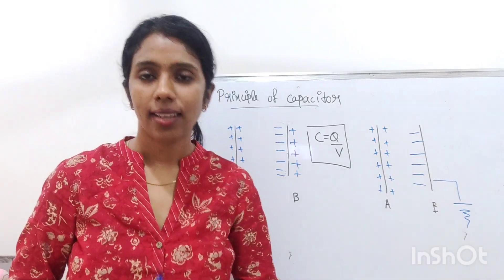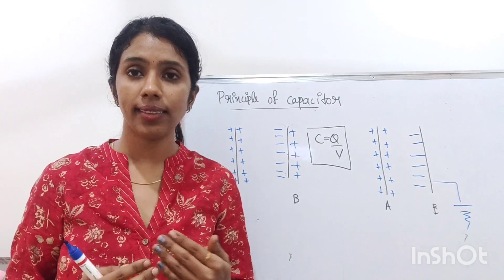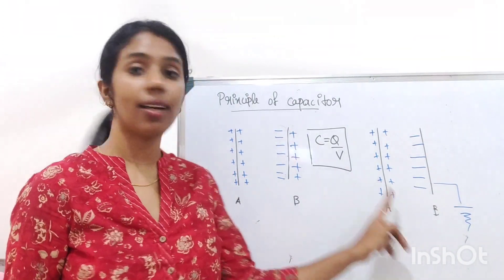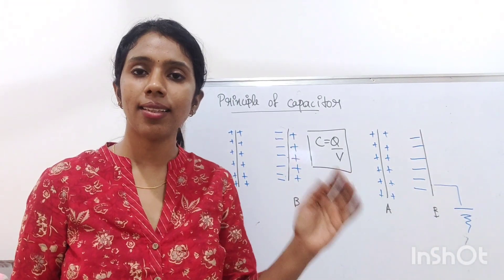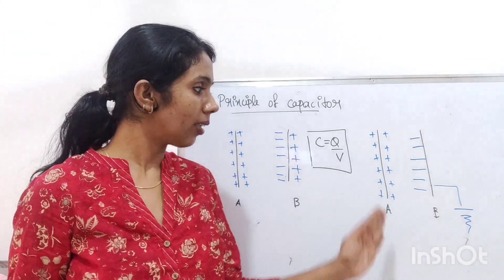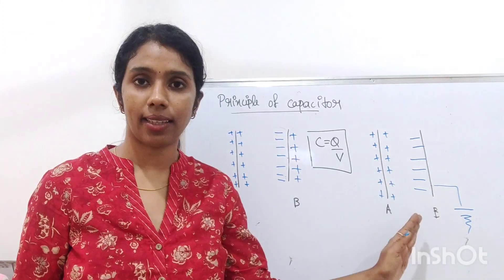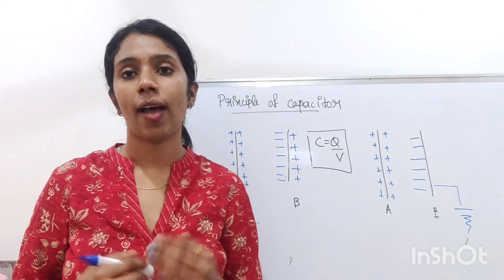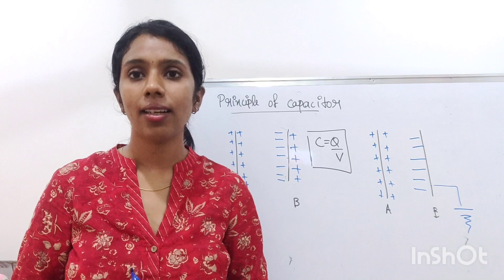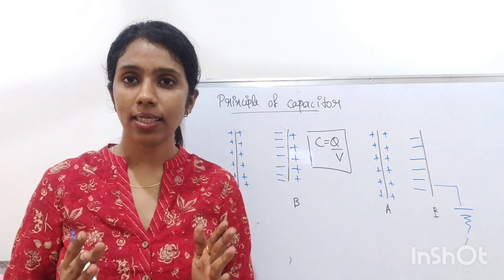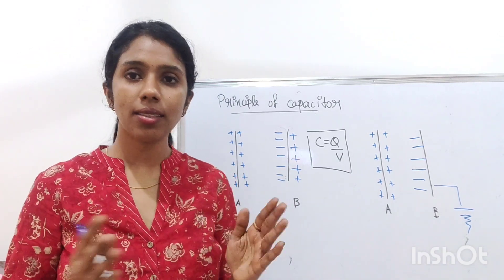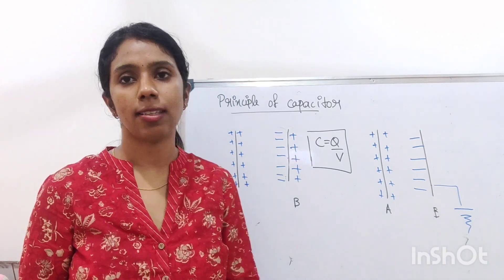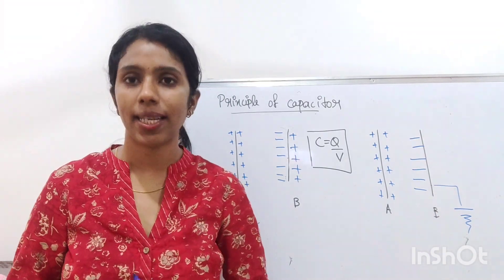This is the principle of a capacitor. The capacitance of an insulated conductor can be increased with the help of an earthed plate — just place an earthed plate near the insulated conductor. This arrangement of two plates where one plate is earthed is known as a capacitor.